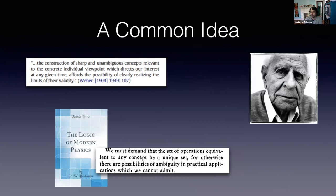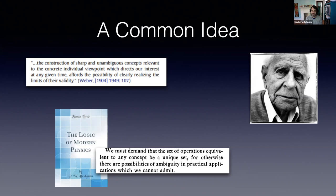Max Weber, in The Protestant Ethic and the Spirit of Capitalism, expresses this view clearly when talking about ideal types: 'The construction of sharp and unambiguous concepts' affords the possibility of clearly realizing the limits of their validity. A very similar idea is found in Popper's criticism of vague and imprecise scientific theories — one of his objections to psychoanalysis was that some of its key concepts are so vague that their domain of application remains very broad.